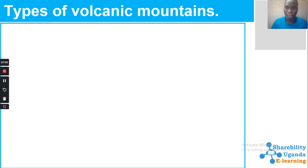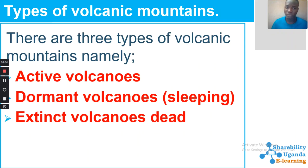There are three types of volcanic mountains: active volcanoes, dormant volcanoes or sleeping volcanoes, and extinct volcanoes or dead volcanoes. Dormant means not active — sleeping or redundant, doing nothing. But if the time comes, they can awaken and become active. Extinct means it is no longer existing, no longer active.